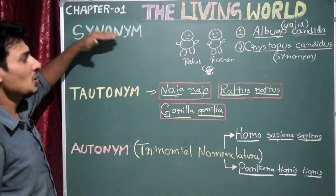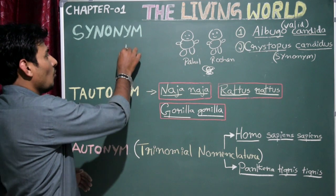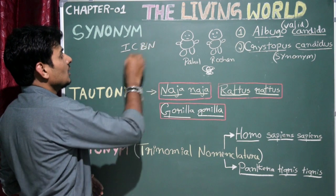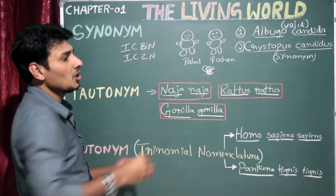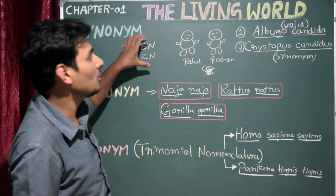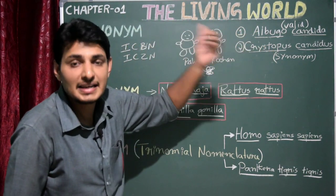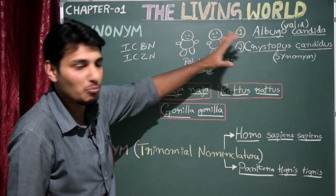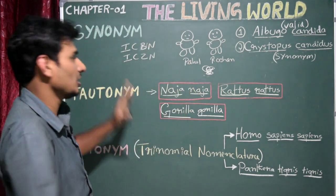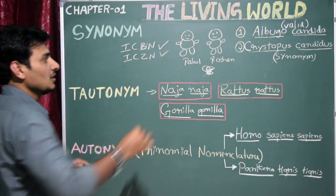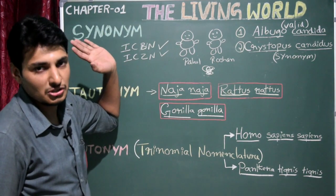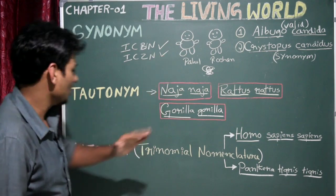The International Code of Botanical Nomenclature (ICBN) as well as the International Code of Zoological Nomenclature (ICZN) both agree to this rule — they give permission to use a synonym, that is, a second name for one organism. Both ICBN and ICZN give permission to this synonym rule.